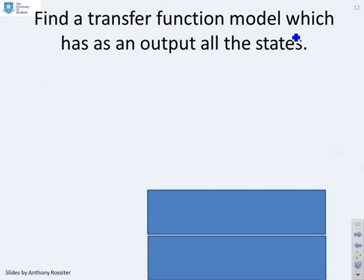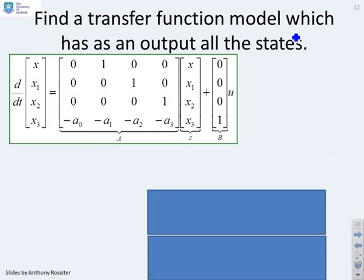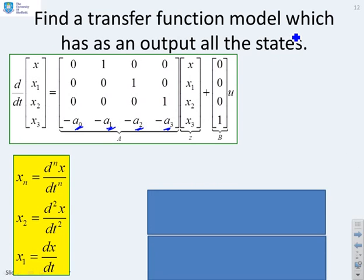So what I'm going to do now is find a transfer function model which has as an output all the states. And this shows you a useful pattern. So here's my AB matrix, and you'll see I've put my coefficients a0, a1, a2, a3. So this is going to be a fourth-order system.